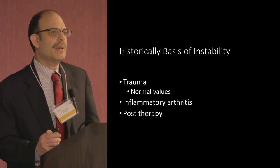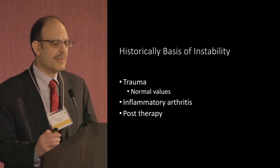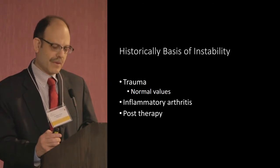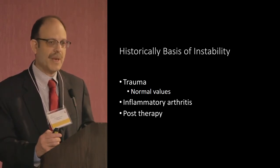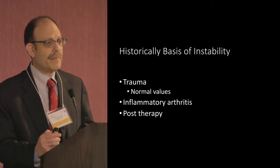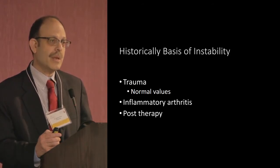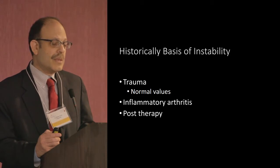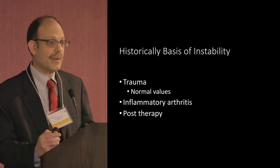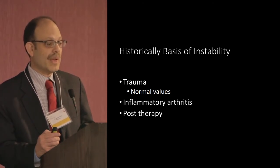Historically, there has been a major attempt to establish a range of normal. In trauma, a number of authors from the 1960s onward looked at spine trauma — it took until the 60s to get good instrumentation and safe anesthesia — to decide who should have something fused or stabilized versus who might heal on their own, particularly when there are ligamentous injuries rather than bone fractures.